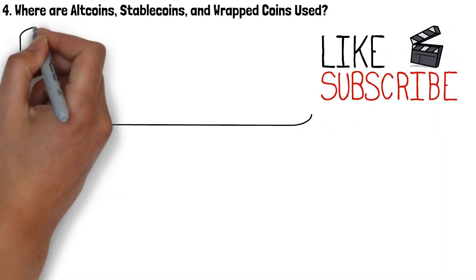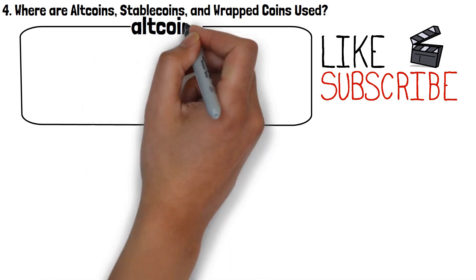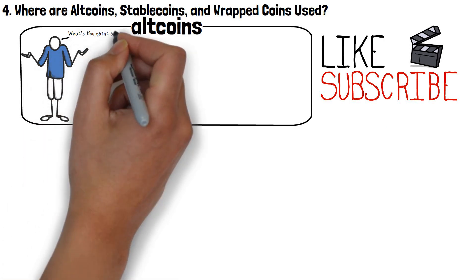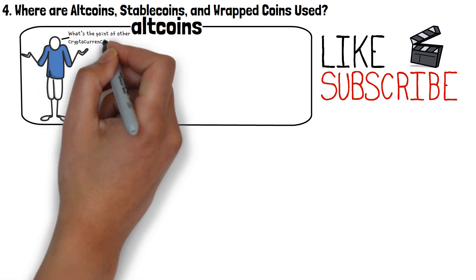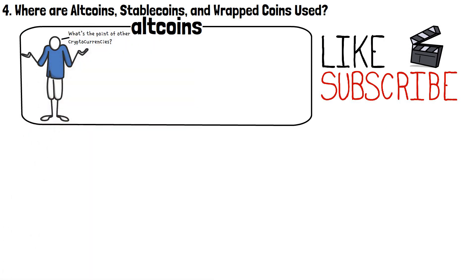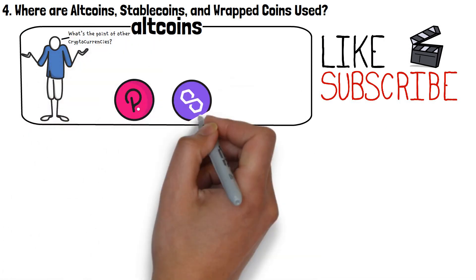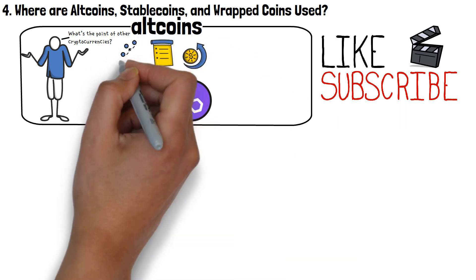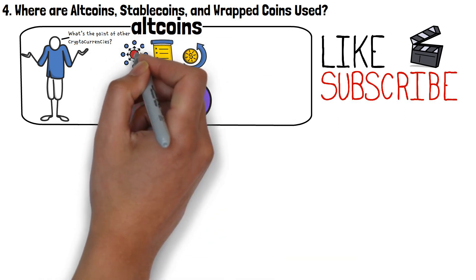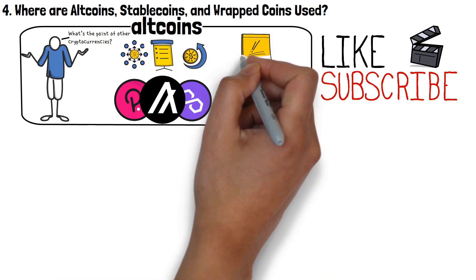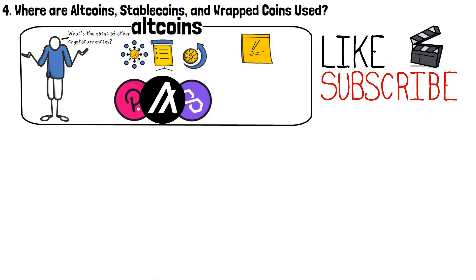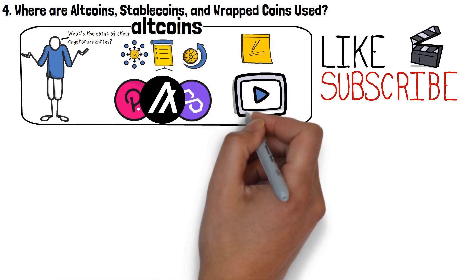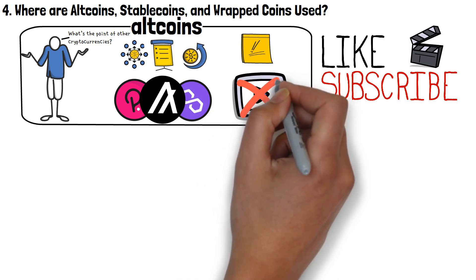Continuing with the same order of things, let's start with altcoins. In all honesty, altcoins are really self-explanatory — it's like asking what's the point of all other cryptocurrencies except for Bitcoin. The best altcoins relate to different crypto-powered projects, various investment strategies, and are the fundamental element of the cryptocurrency industry as a whole. If altcoins didn't exist, you probably wouldn't be watching this video in the first place.